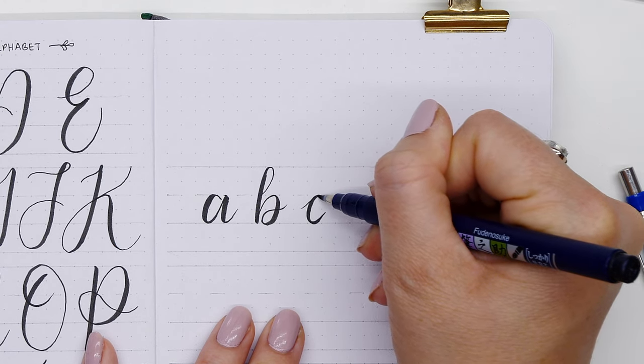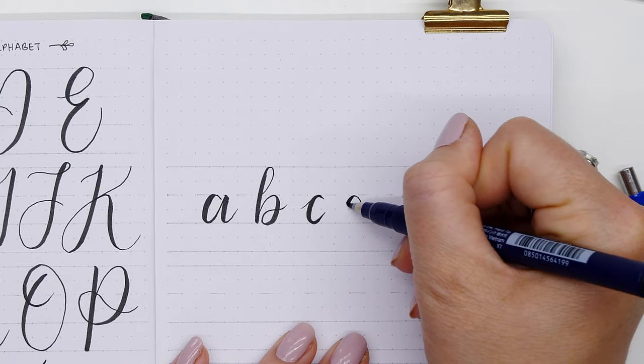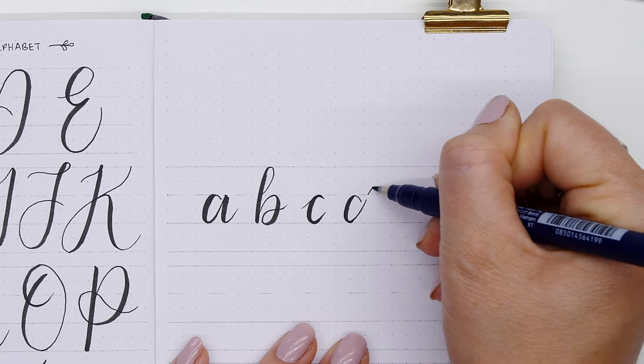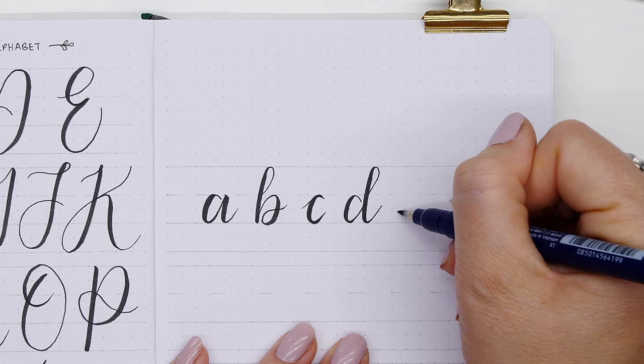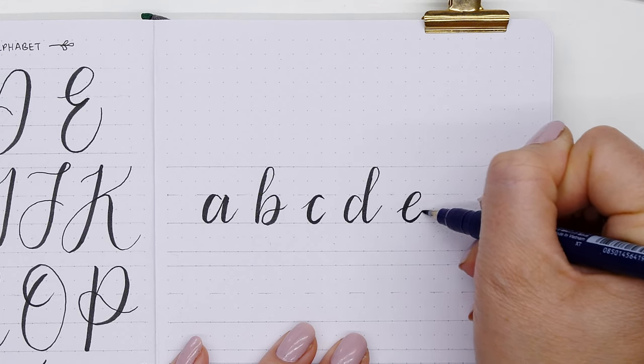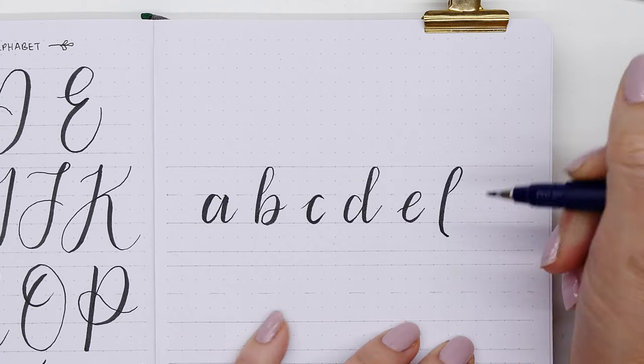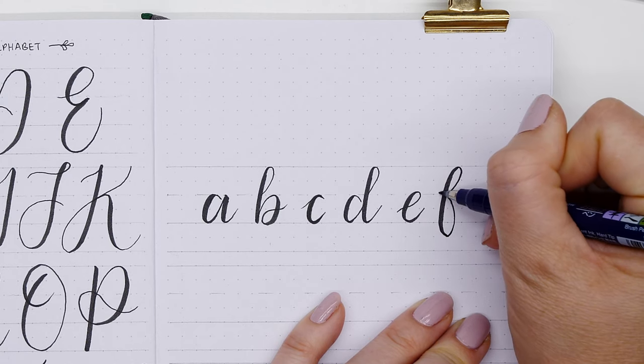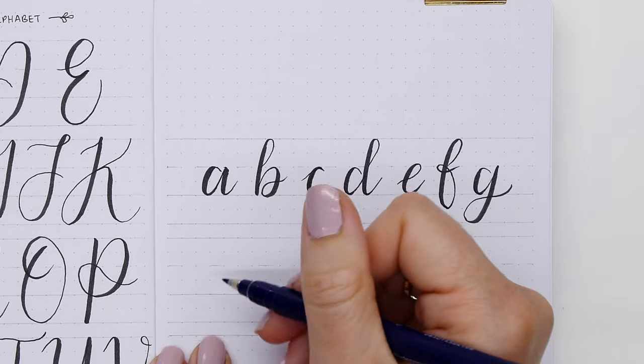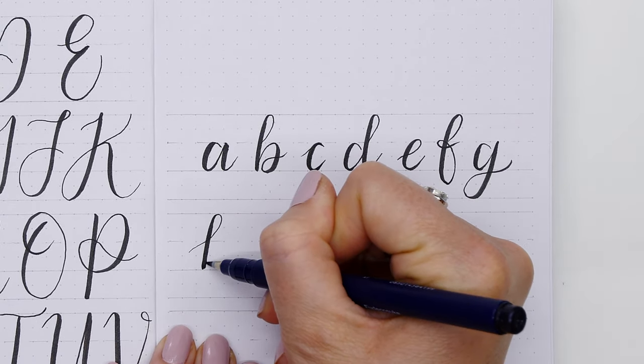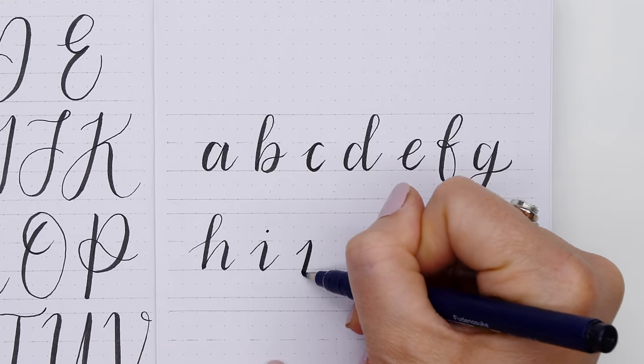One thing to remember when you're working with calligraphy is that you don't need to keep your pen on the page to form an entire letter. It's actually much better—you get a much better result if you take the pen off between the strokes. Here in the D, I started with the loop for the base of the D and then took my pen off and started fresh for the leg of the D. That is what is the big difference between a cursive font and calligraphy.